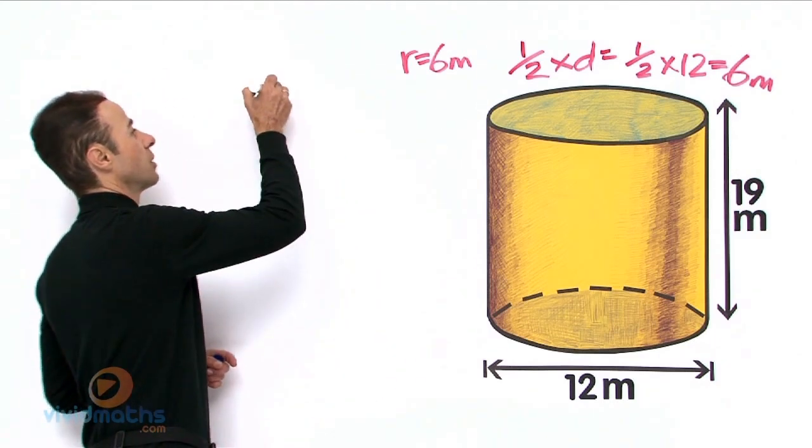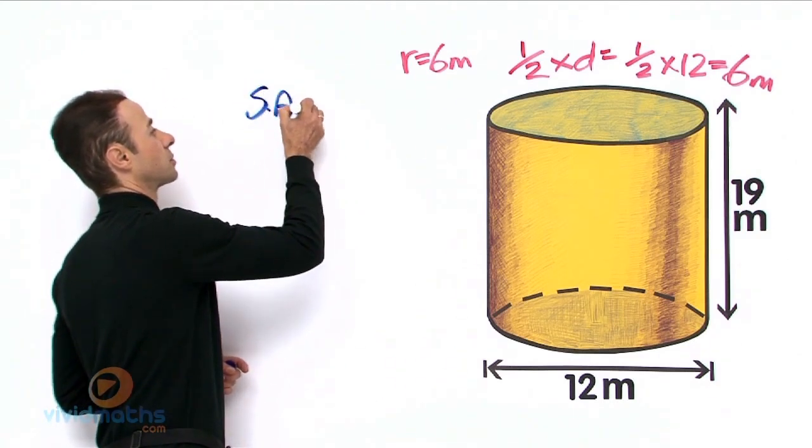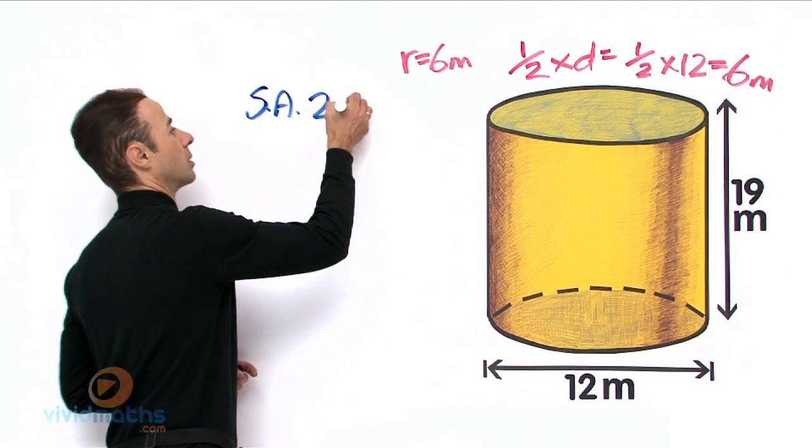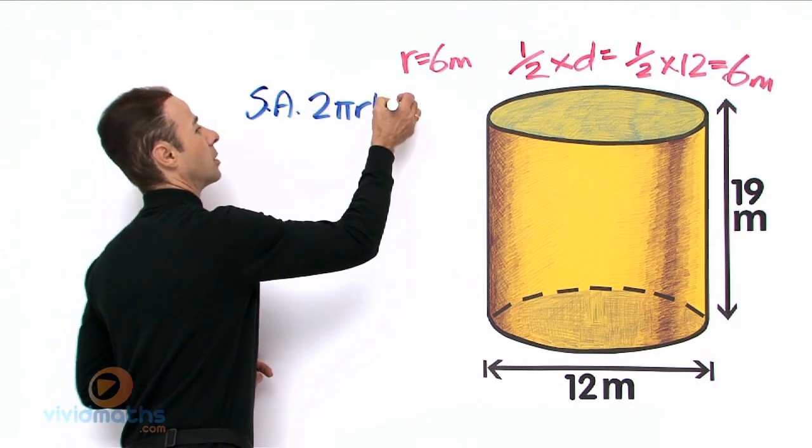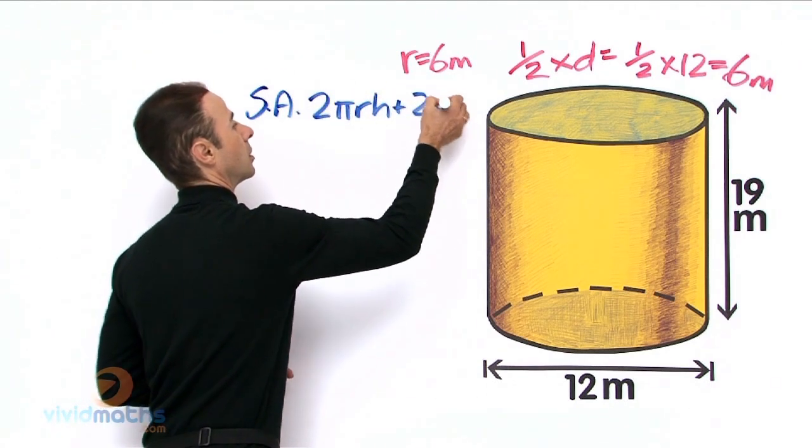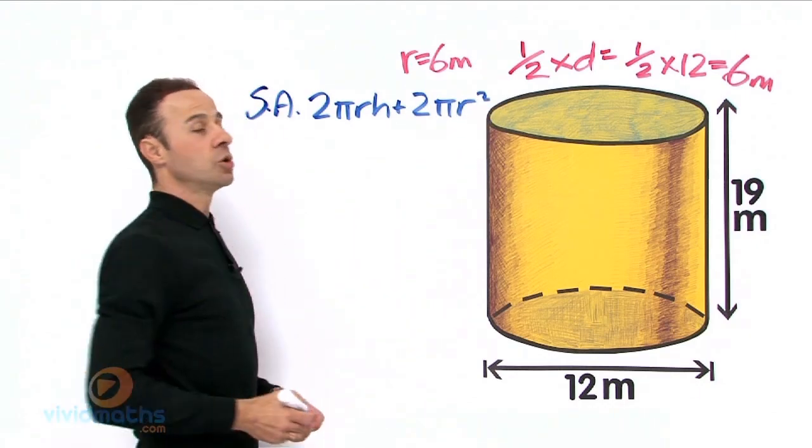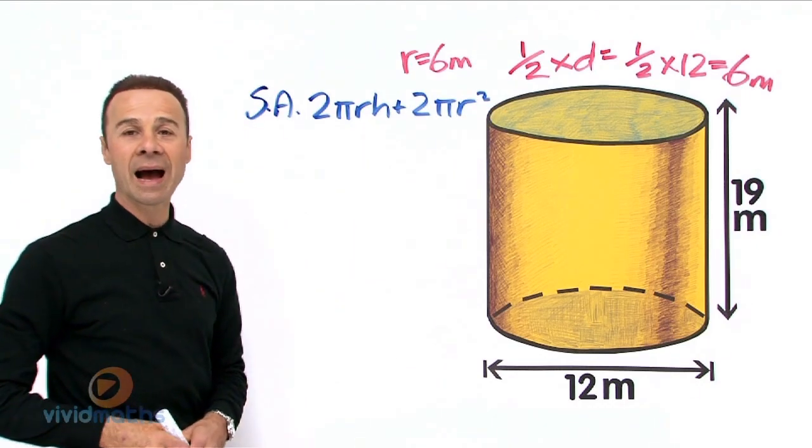The cylinder surface area is 2πrh + 2πr².